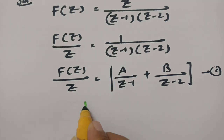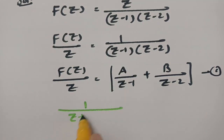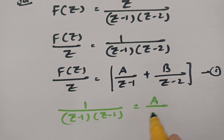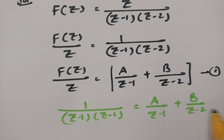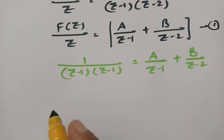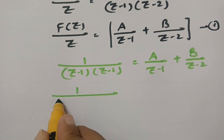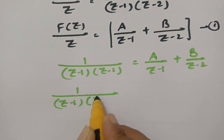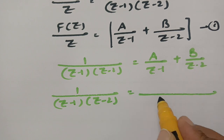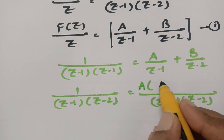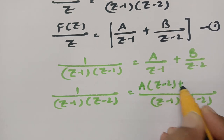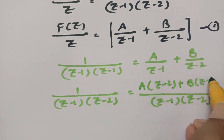According to partial fractions, 1 by Z minus 1 into Z minus 2 can be written as A by Z minus 1 plus B by Z minus 2. If I take LCM, Z minus 1 into Z minus 2, this will give A into Z minus 2 plus B times Z minus 1.